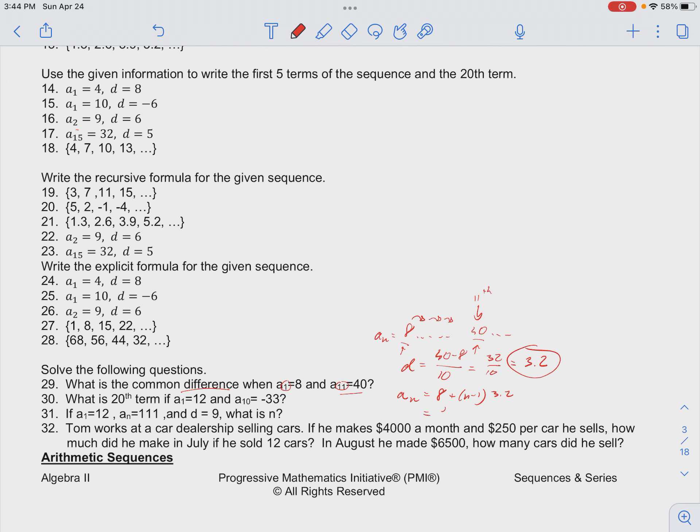So plugging in 11, we have 8 plus 11 minus 1 which is 10 times 3.2. So that would be 32 plus 8 giving us 40. So that's how we know that our common difference is correct, which is 3.2.